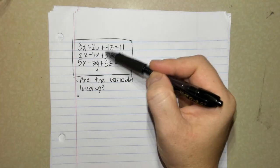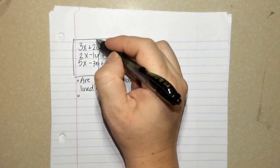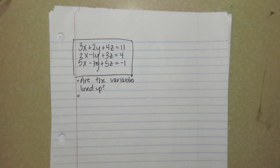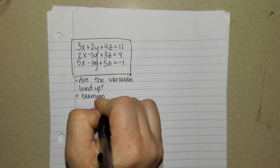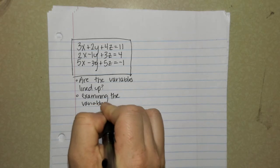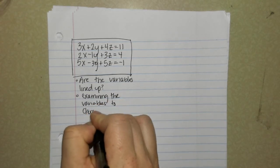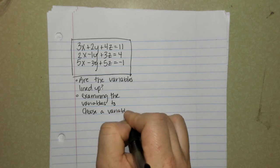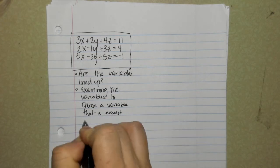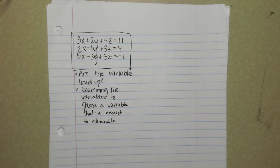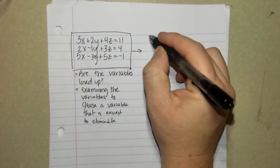Same with the z's. Four, three, four, five, three, five, they don't cancel nicely. But when you look at the y's, it's a little bit easier to cancel things. So right now I'm examining the variables to choose a variable that is easiest to eliminate. I believe for this particular problem, it will be easiest to eliminate the y's. So that's what we're going to start with eliminating.